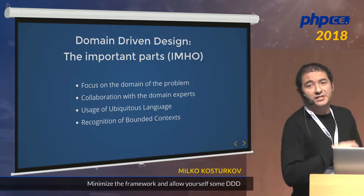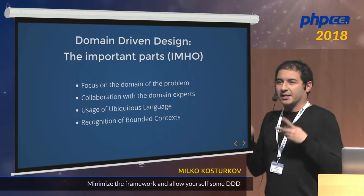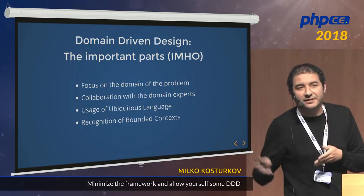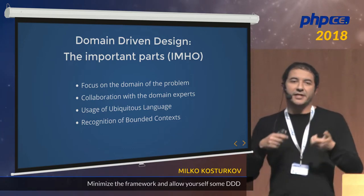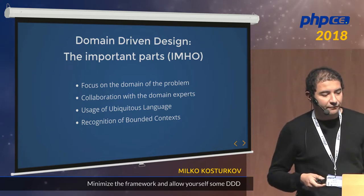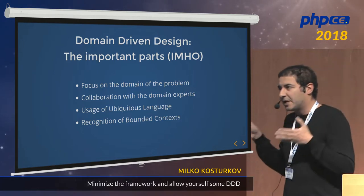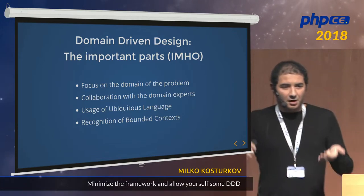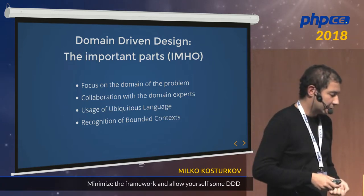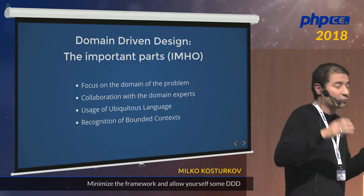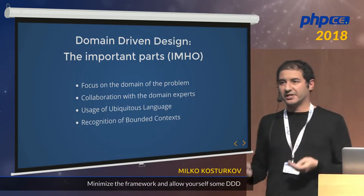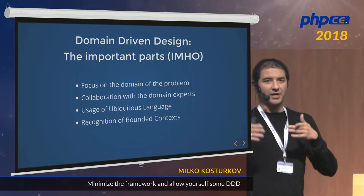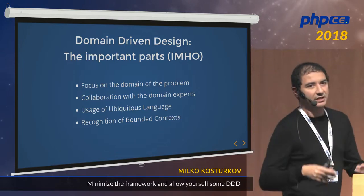Then use the so-called ubiquitous language. Ubiquitous language is the language that those experts would speak — the dialect of their native English, the terms they use in their day-to-day work, with a particular meaning for the field they're in. Maybe some words would have a particular meaning different from what you're used to, or they would have expressions with a particular meaning. Use this to talk to them, understand what they're saying, use this in your code, and unify the way the code reads with the way you speak to them.